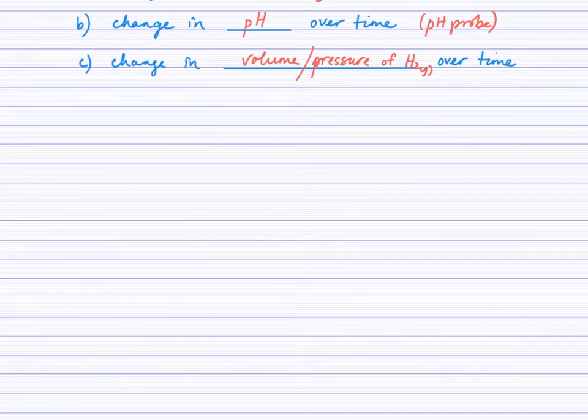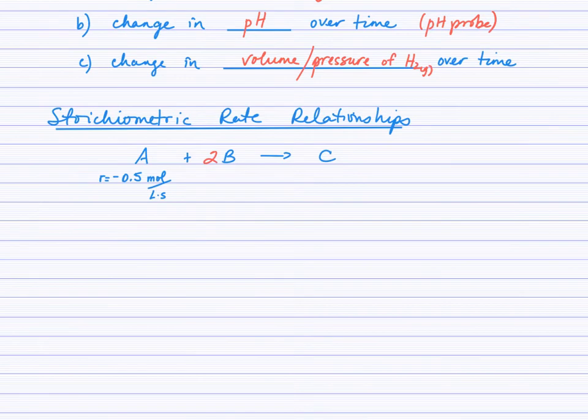One of the learning goals we haven't addressed yet was the idea of stoichiometric relationships. Let's take this equation: A plus 2B produces C. You notice that I've indicated here that the rate of, and I'll make a point here, that there's a negative. The rate of consumption of A is 0.5 moles per liter second. The question could be then to find the rate of consumption of B and the rate of production of C.